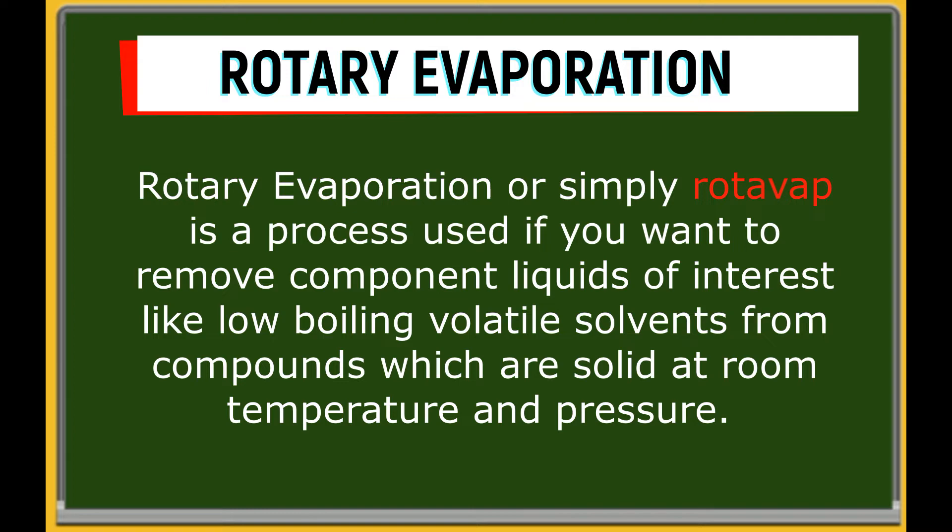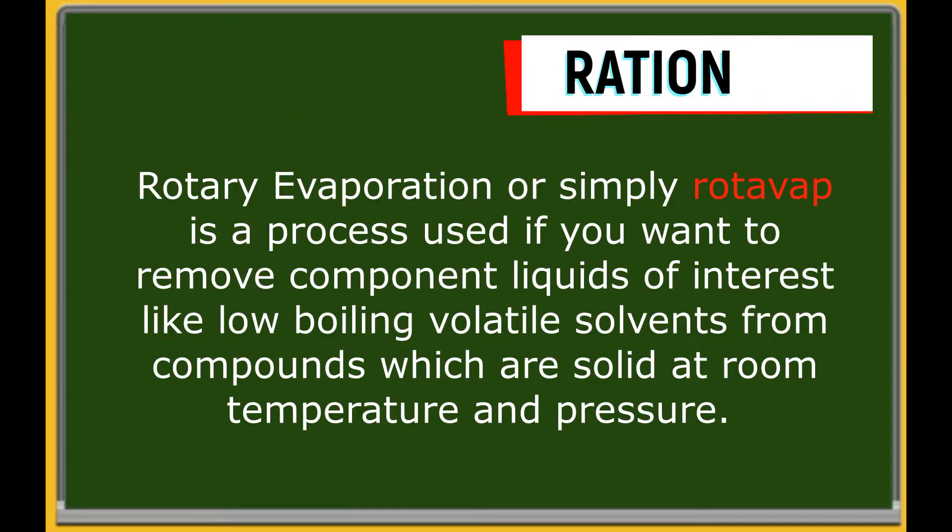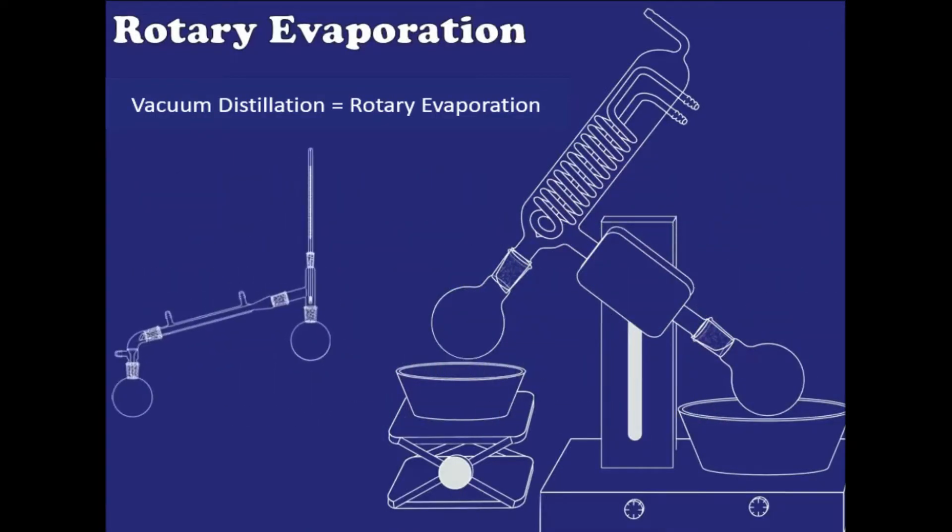One type of evaporation technique that is used in organic chemistry is rotary evaporation. The process is used if you want to remove component liquids of interest, like low boiling solvents, from compounds which are solid at room temperature and pressure. The process is similar to a simple distillation setup. In fact, this is also known as vacuum distillation. They may look quite differently, however, the parts serve the same purpose.